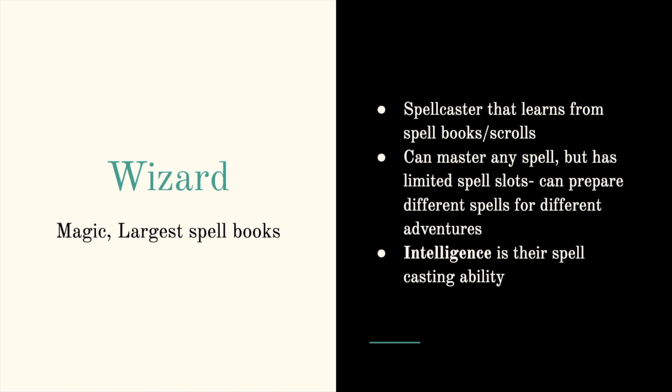Next, a wizard. Magic — largest spell book. Wizards are spell casters that learn from spell books and scrolls. Because of this, you can master any spell that you read, but you have limited spell slots. You can choose to prepare different spells for different adventures and have the highest amount of spells prepared, but you still have limited spell slots. Intelligence is a wizard's spell casting ability because their magic comes from what they read.